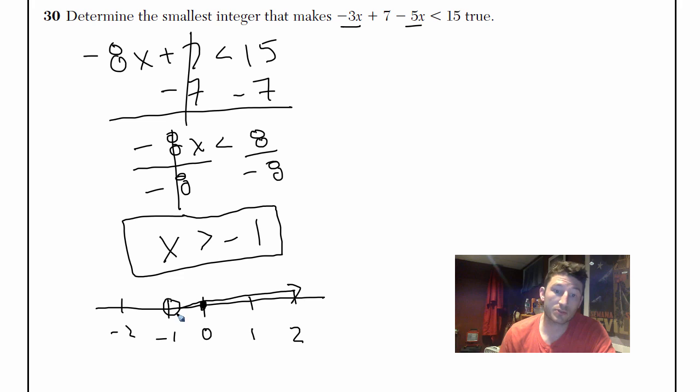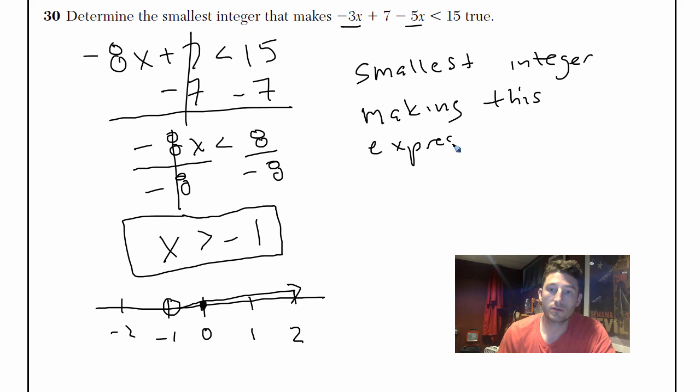So we want all the numbers bigger than negative 1. And the next integer, like I said, is 0. So the smallest integer making this expression true is x equals 0. That's it. You're done.